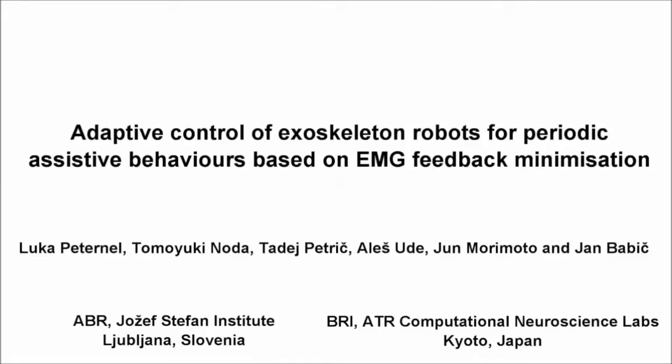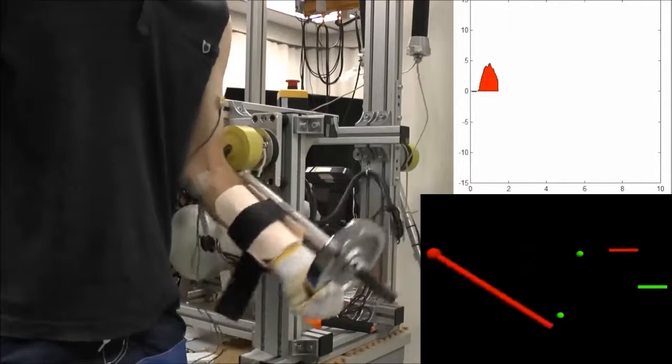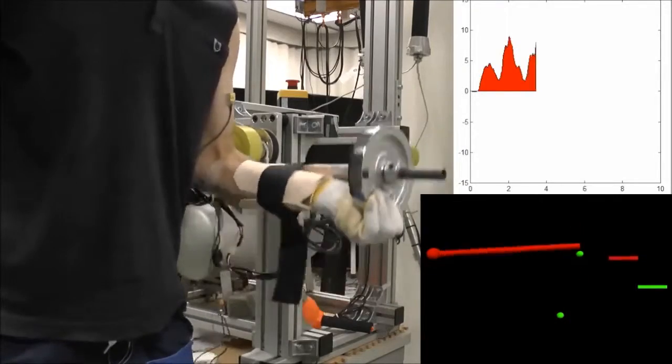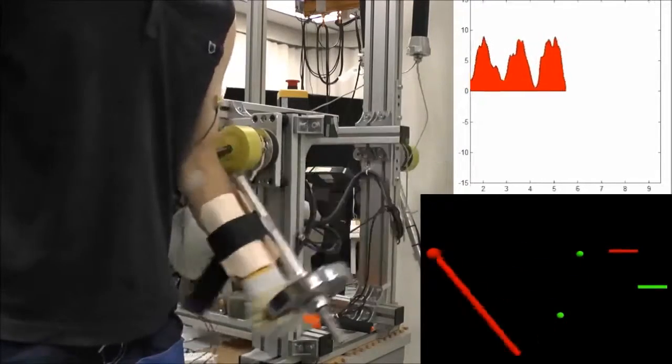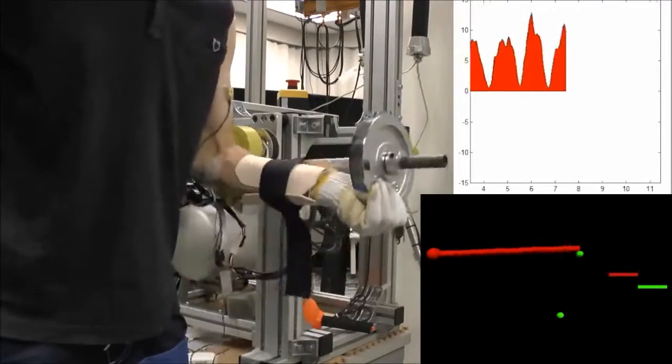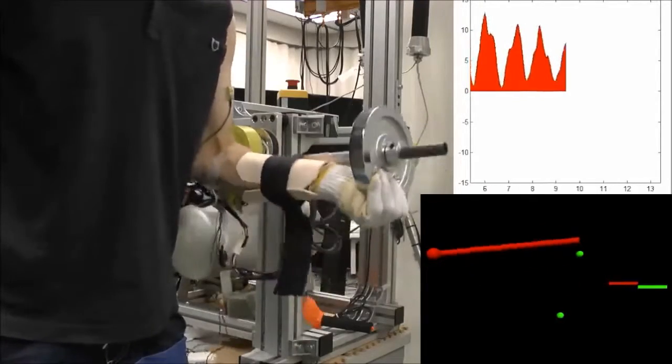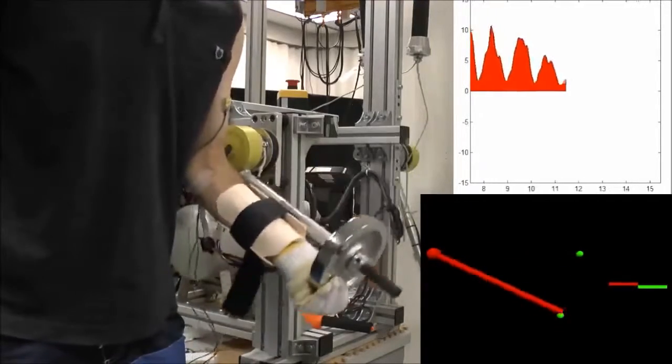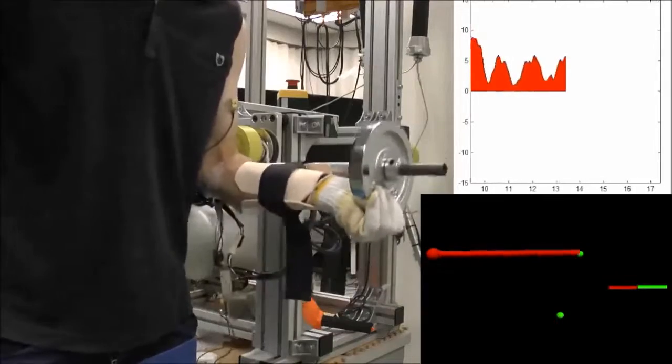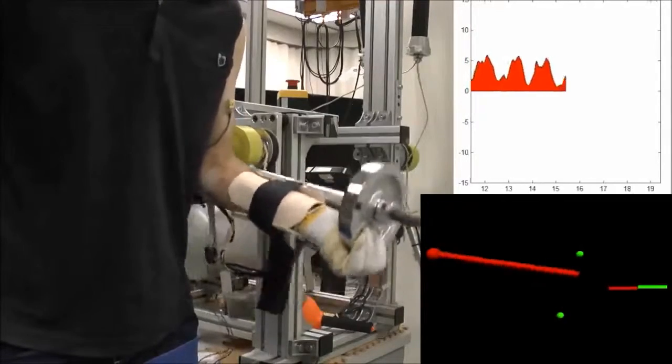In this video, we show a demonstration of our method on two different exoskeletons. In these experiments, the human was periodically moving an object of unknown mass from one position to another. The task of the exoskeleton was to offload the effort of the human by minimizing the muscular effort.